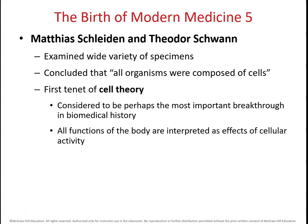Next we have two scientists from the 1800s: Schleiden and Schwann. Their big contribution was the conclusion that all living things are made of cells — the beginning of cell theory, which we'll talk about more in chapter two. Schleiden was a botanist and Schwann was a zoologist, and they worked together examining a wide variety of living things and concluded that if it's alive, it must be made of cells.